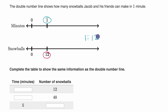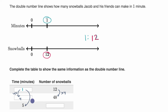Another way to think about it: snowballs equals 12 times the minutes. Over here, if I have 12 snowballs, that's going to be one minute. If I have 48 snowballs — to go from 12 to 48 you multiply by four, so it's going to take four times as many minutes, which is four minutes. And if you go to five minutes, five times 12 is 60 snowballs. So the table is: one to 12, four to 48, five to 60. For every five minutes, they can make 60 snowballs.